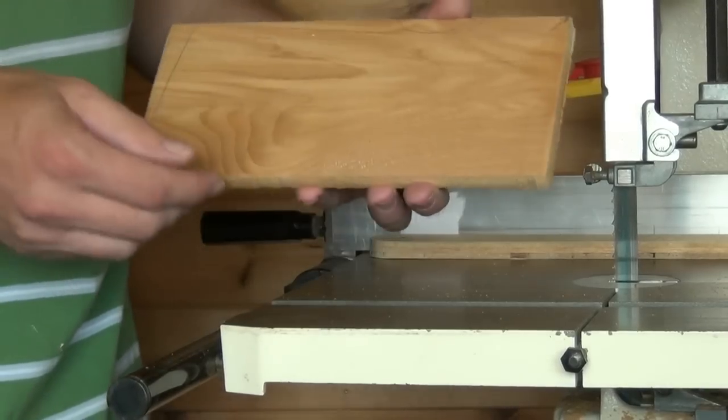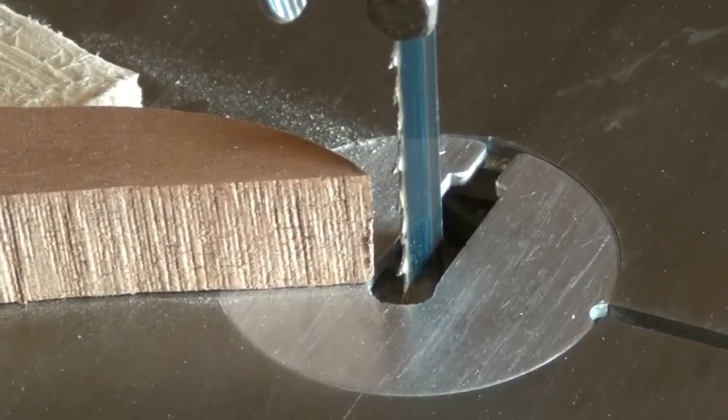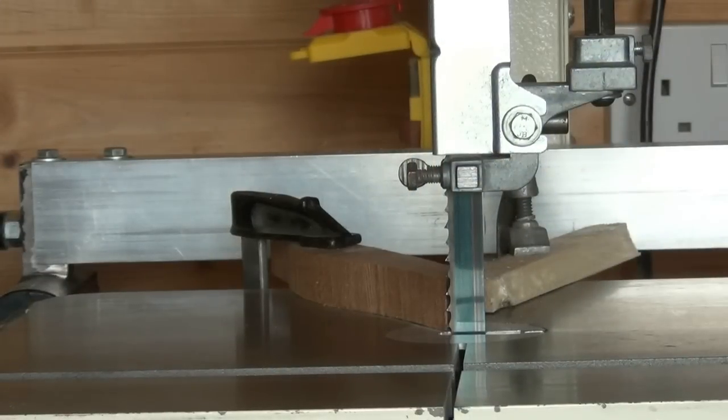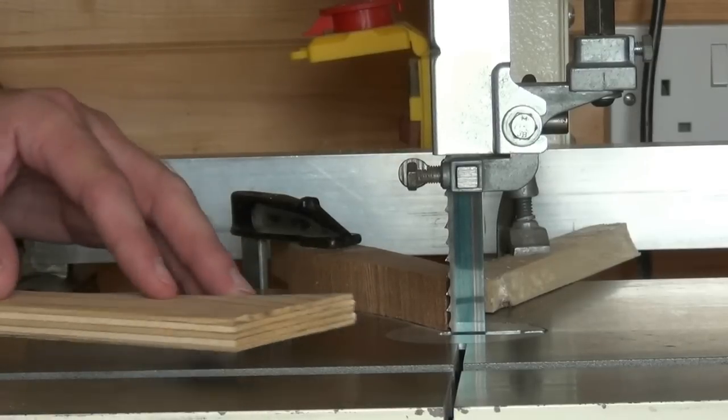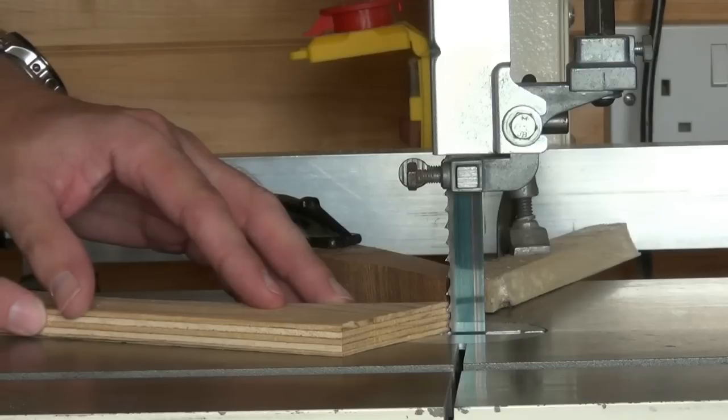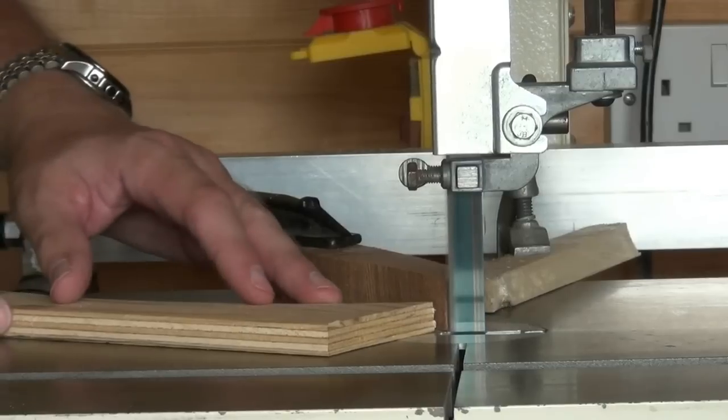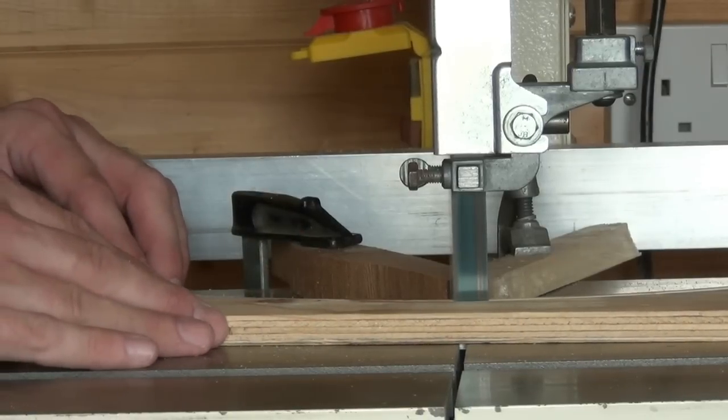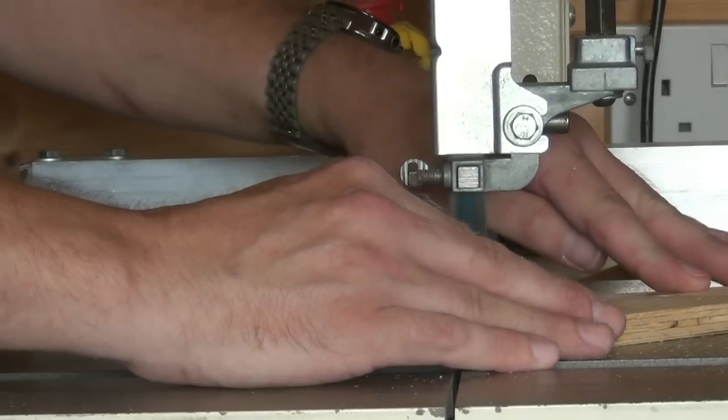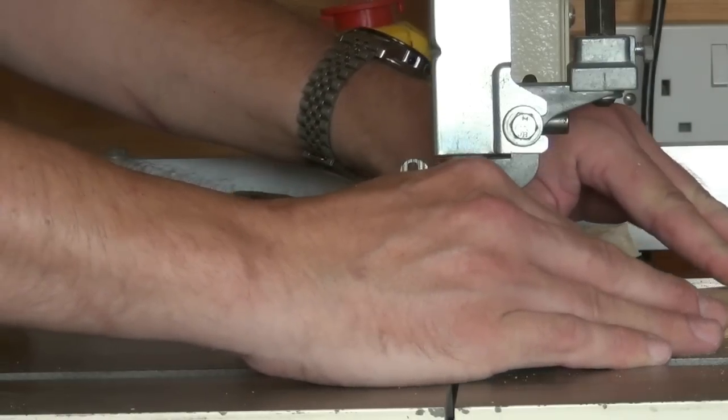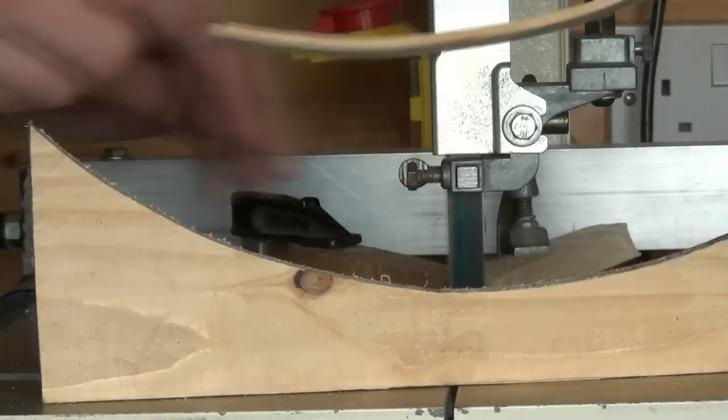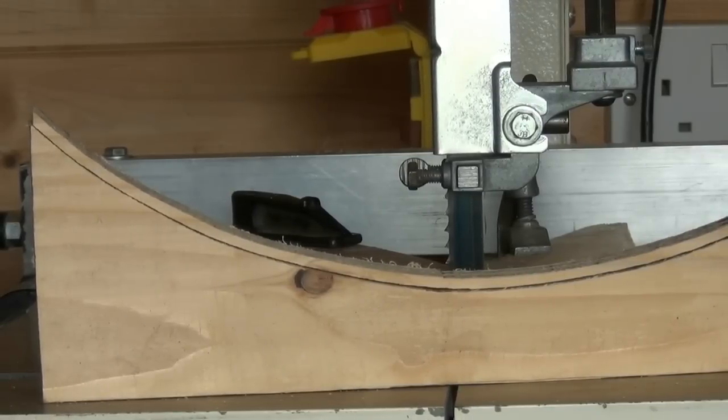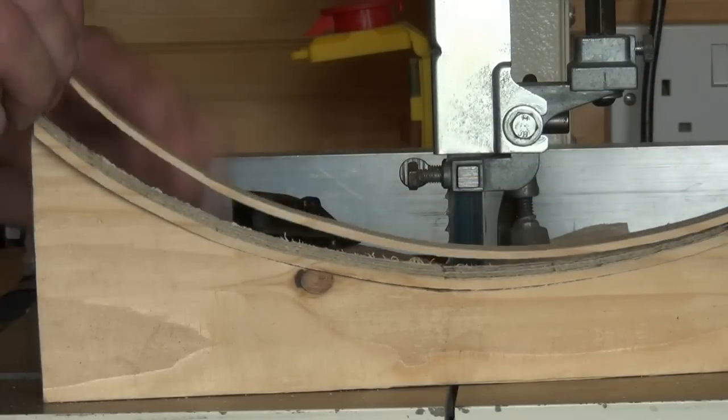So we can accurately cut to width and to length. By using what is known as a point fence, it's very easy to copy a previously cut curve. We simply track the curve against the point of the point fence and pass it through the blade. The distance between the point fence and the blade determines the thickness of the copy.